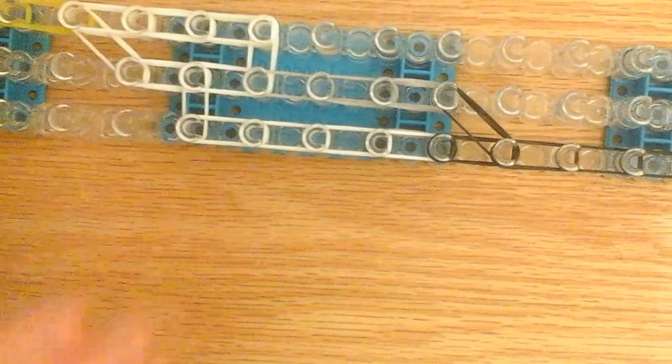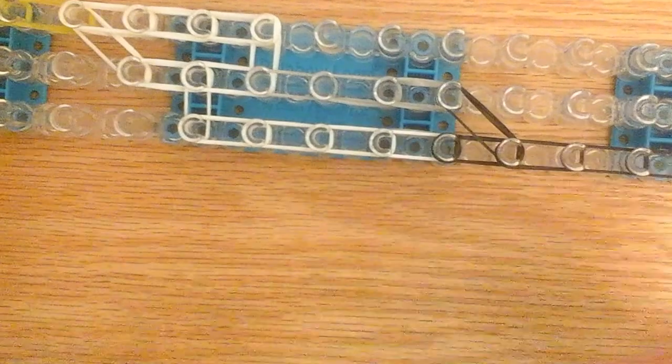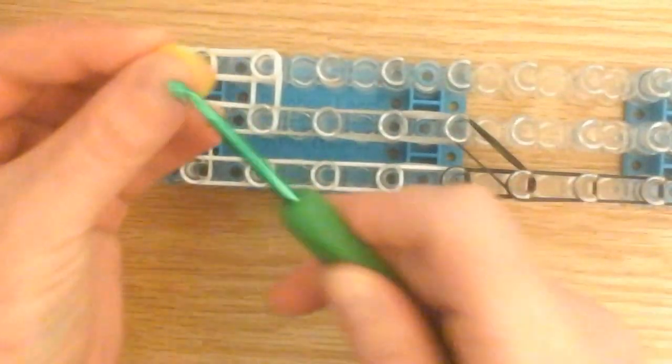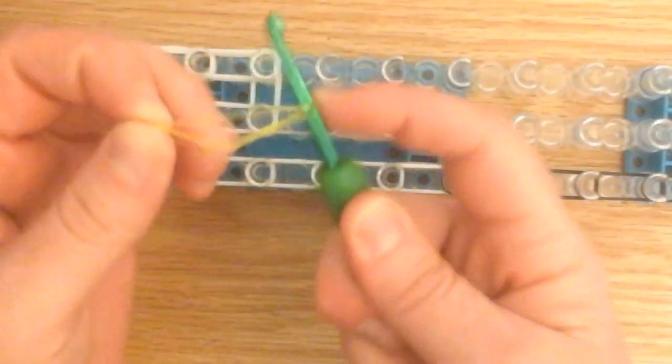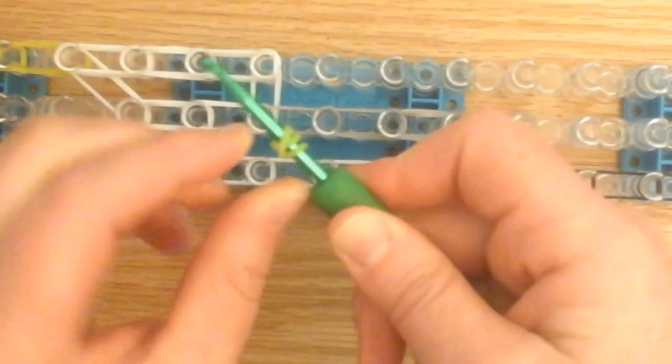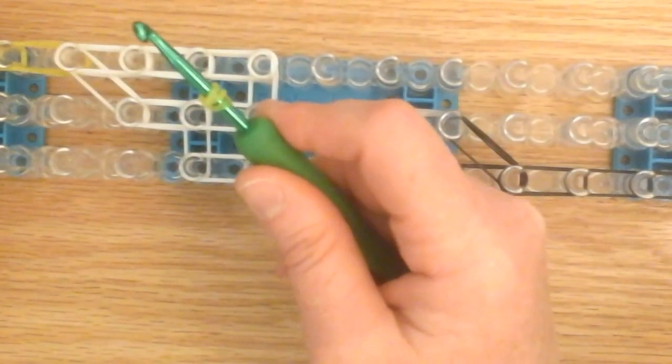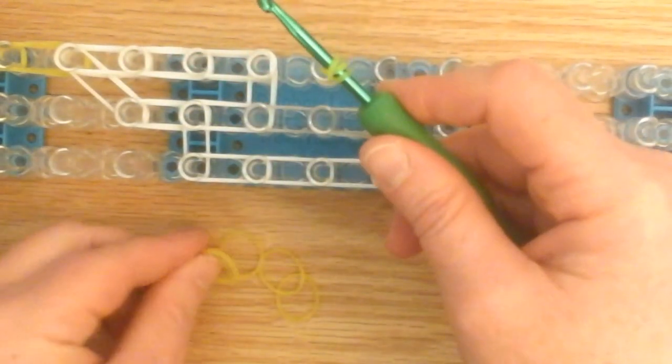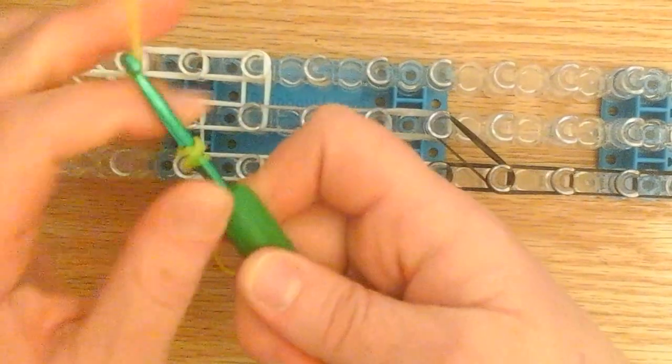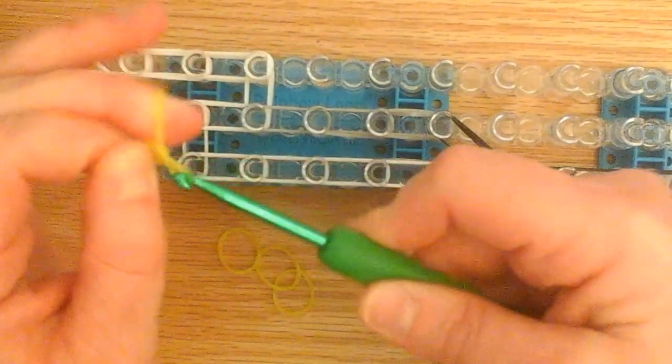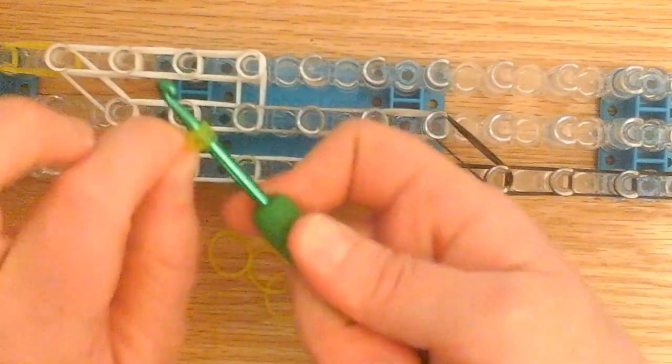Now we're going to work on the legs. Take one band, wrap it three, two and three. And then we're going to take four single bands. Twist it and slide this right on top.